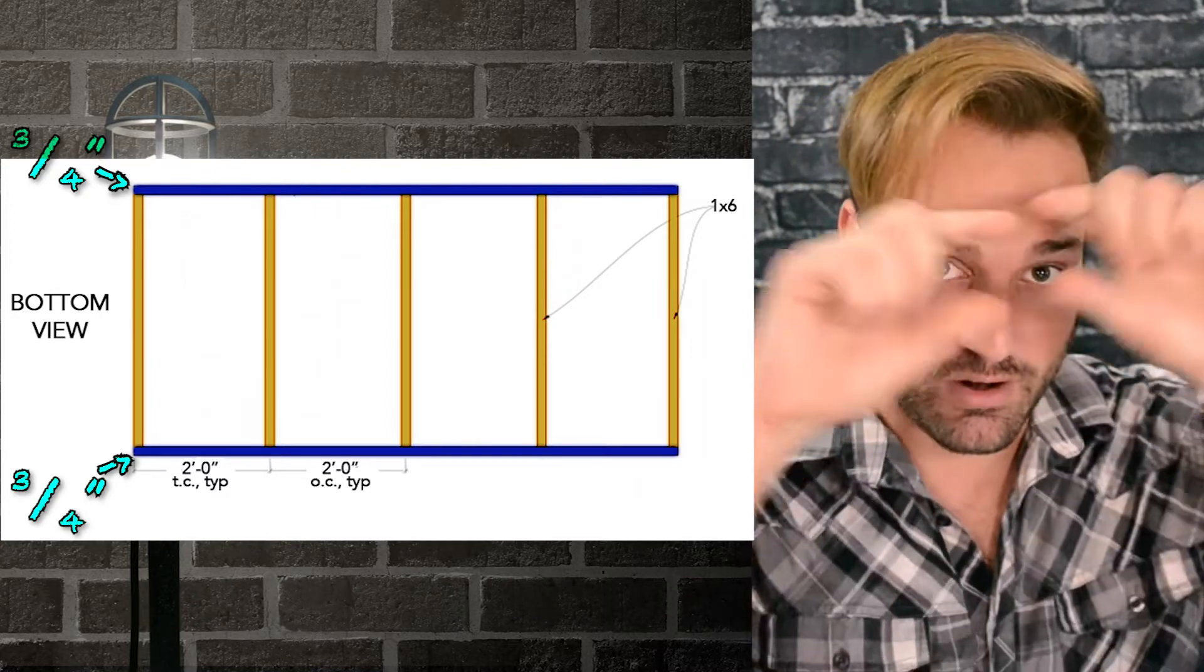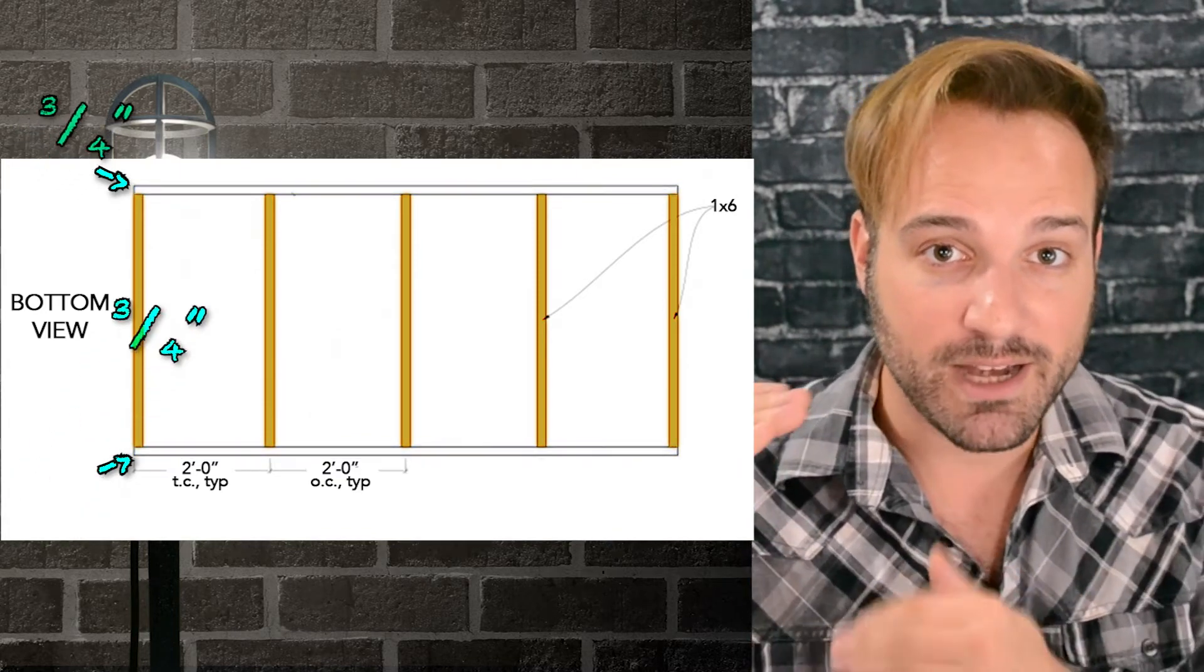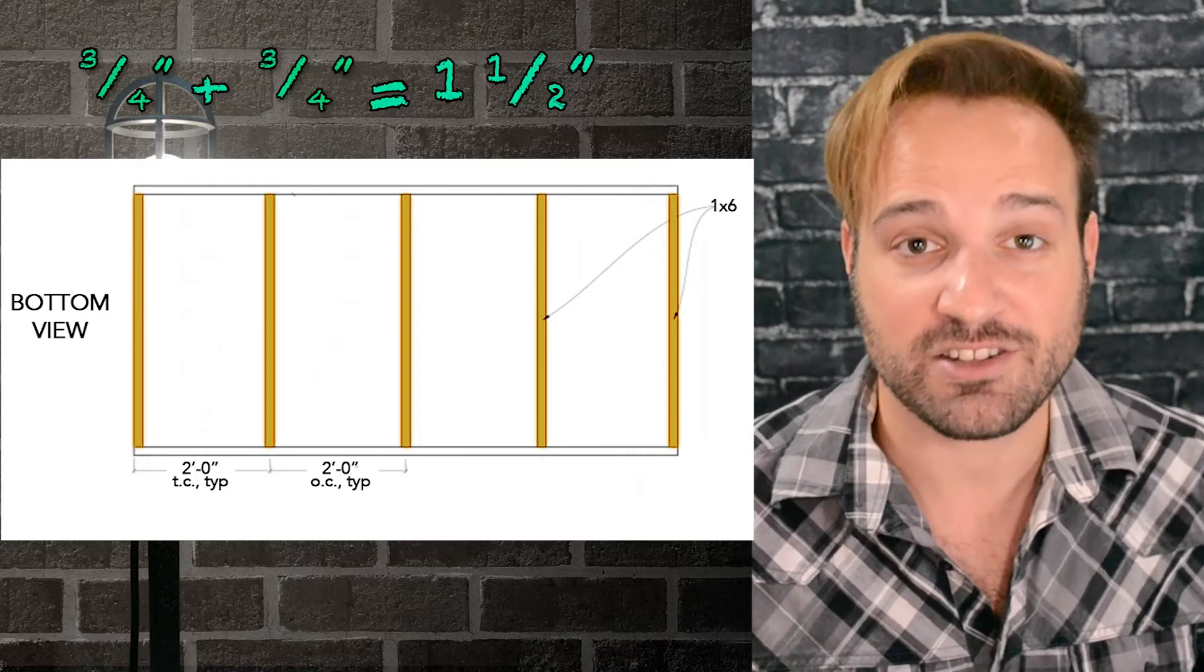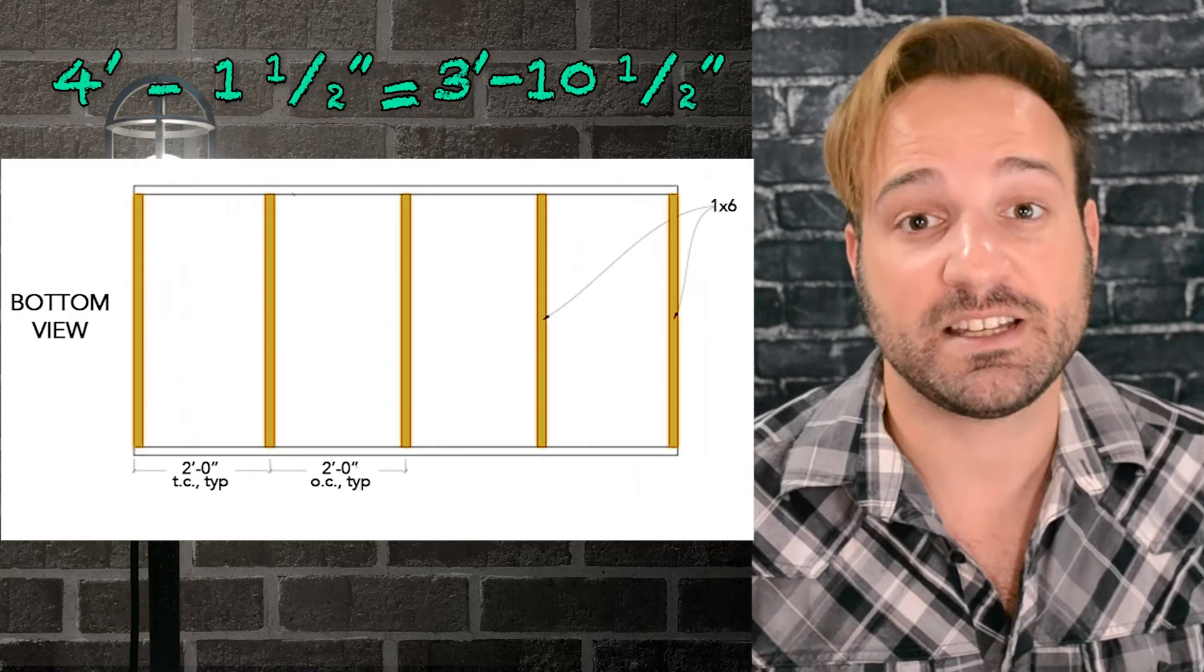So, you have two of them, right, on the top and the bottom. You need to take away both of those. You need to accommodate for that width. So, three-quarters plus three-quarters is an inch and a half. So, you have to take away an inch and a half from four feet, which is three foot ten and a half inches.